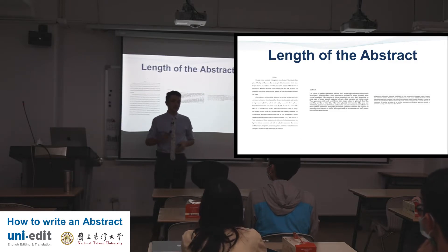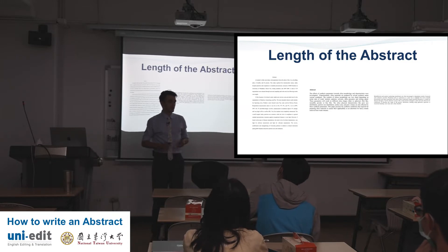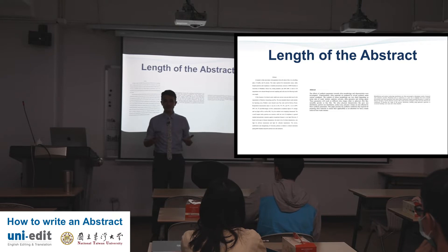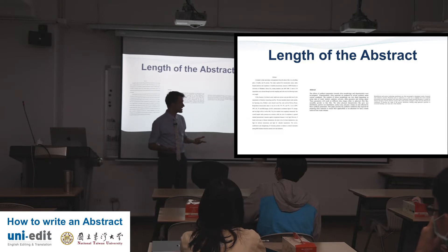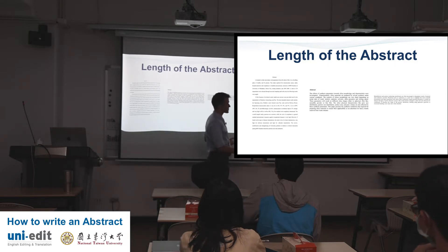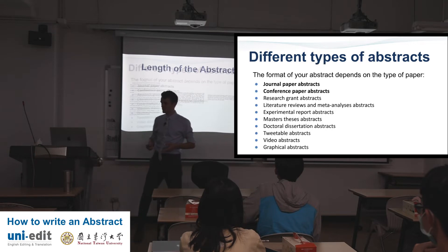Length of the abstract: I would love to say every abstract is 150 words, but that's not true. Every journal might be different, conference abstracts might be different, theses and dissertations might be different. Generally, the middle range is most common, but it depends.